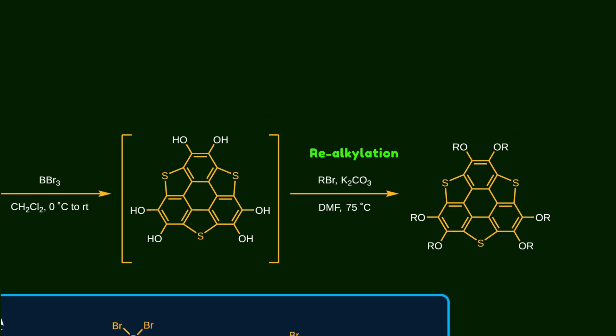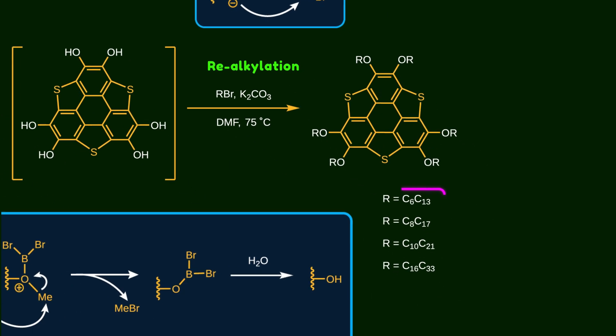For the re-alkylation step, potassium carbonate abstracts the hydrogen of the hydroxy groups, and then alkyl bromides are installed on the molecule via a simple SN2 reaction. In this way, long-chain carbon substituents can be introduced on the oxygens.